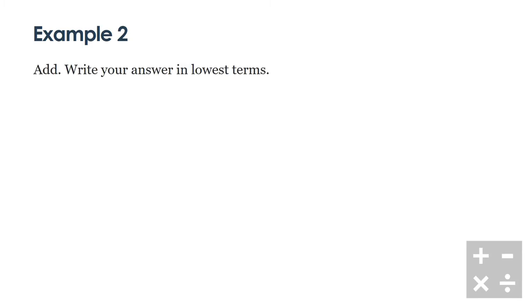Let's try this again with a second example. Exact same instructions as last time: add, write your answer in lowest terms. We have 4 over 9 plus 2 over 9. Just like last time, the first thing that we're going to do is rewrite our numerators as an addition statement.